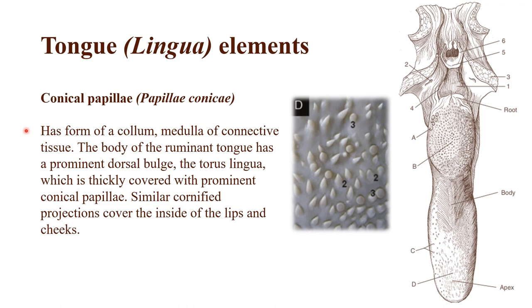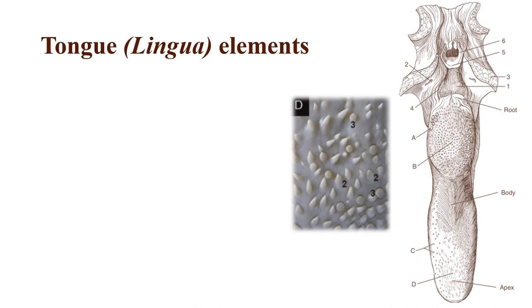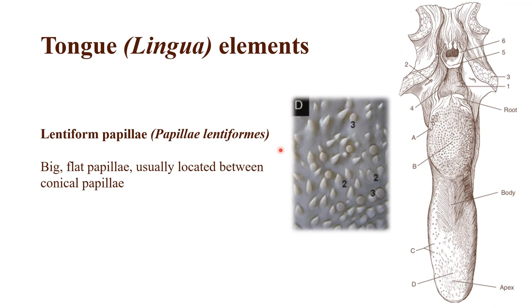Next up we have the conical papillae. They represent columns and have a medulla of connective tissue. They cover the inside of the lips and cheeks sometimes. Then we have the lentiform papillae, which look almost like lentils — they're big and flat and are usually located between the conical papillae.